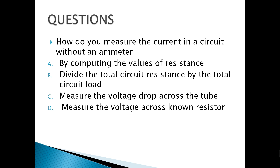How do you measure current in a circuit without an ammeter? We know that when measuring current, the ammeter should be connected in series. So the correct answer is letter D — measure the voltage across a known resistor. If we know the voltage across a known resistor, we can easily find the current, because current through a known resistor equals the current in that series circuit.